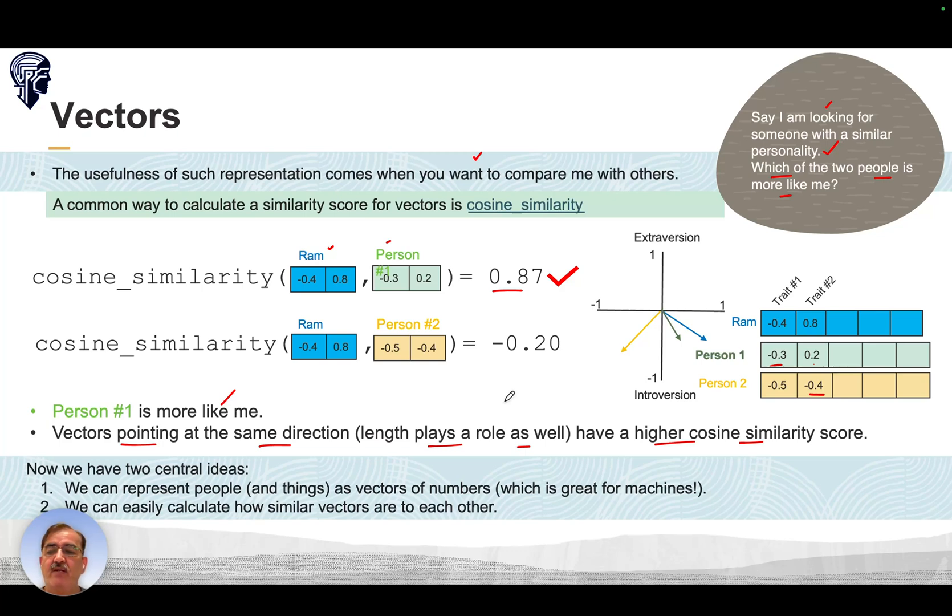Vectors pointing in the same direction have higher cosine similarity scores. We have two central ideas. One: we can represent people and things as vectors of numbers, which is great for machines. Two: we can easily calculate how similar vectors are to each other. The vector's dimension and magnitude play a crucial role in generative AI because context is important. For example, 'model' in the context of an advertising agency has a different meaning than 'model' in machine learning. Similarly, 'save the file' has a different meaning than 'you saved my life.' The dimensionality gives that context.